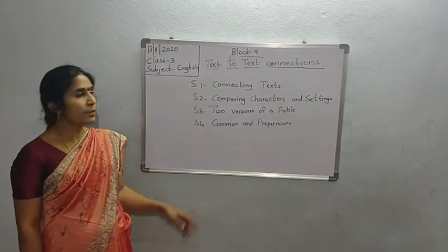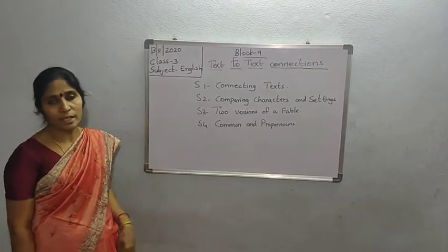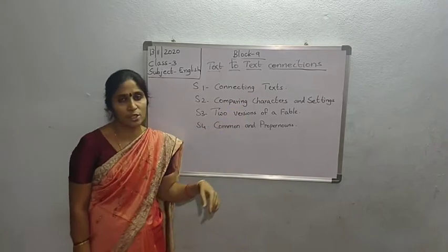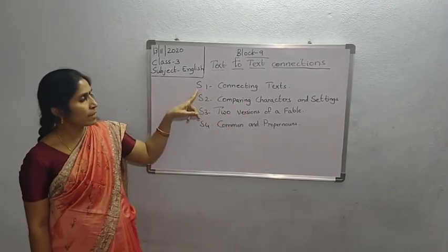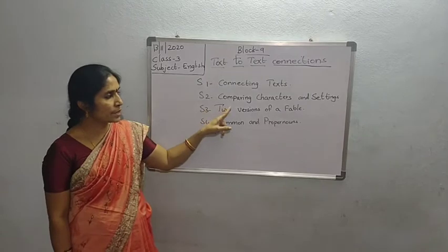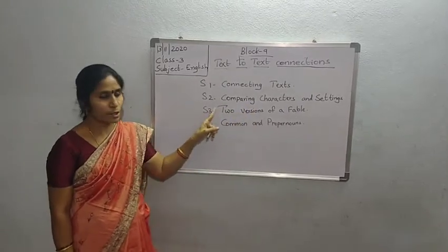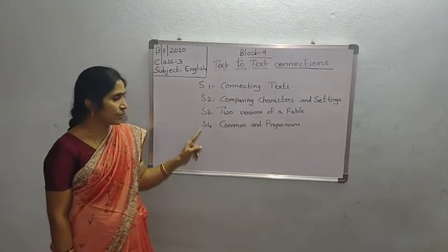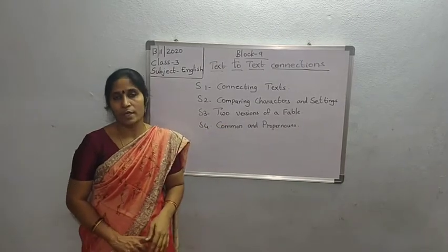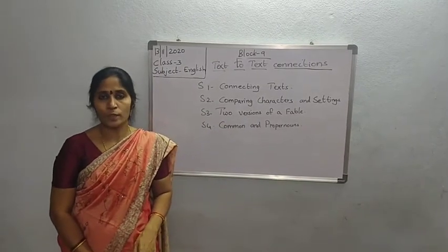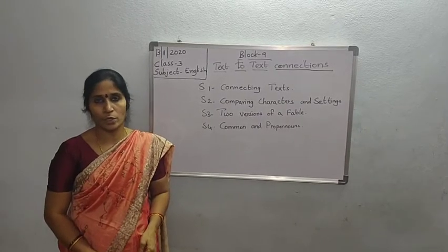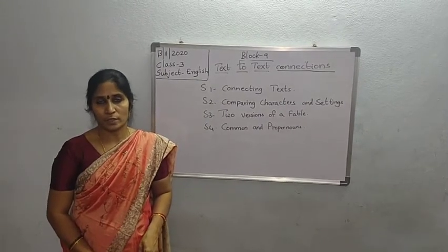Good morning children, welcome back to third standard English class, block 9, text to text connections. In this, we have completed S1 connecting text, S2 comparing characters and settings, S3 two versions of a fable, S4 common and proper nouns. In this session we are going to do some bits in our English reader and also complete the class works.